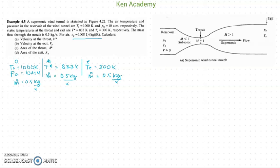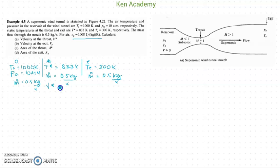Greetings everyone, welcome to another episode of Khan Academy, wherein we will try to solve for this question — the velocity at the exit. In the last episode we solved for the velocity of the throat, which is 580 meters per second.